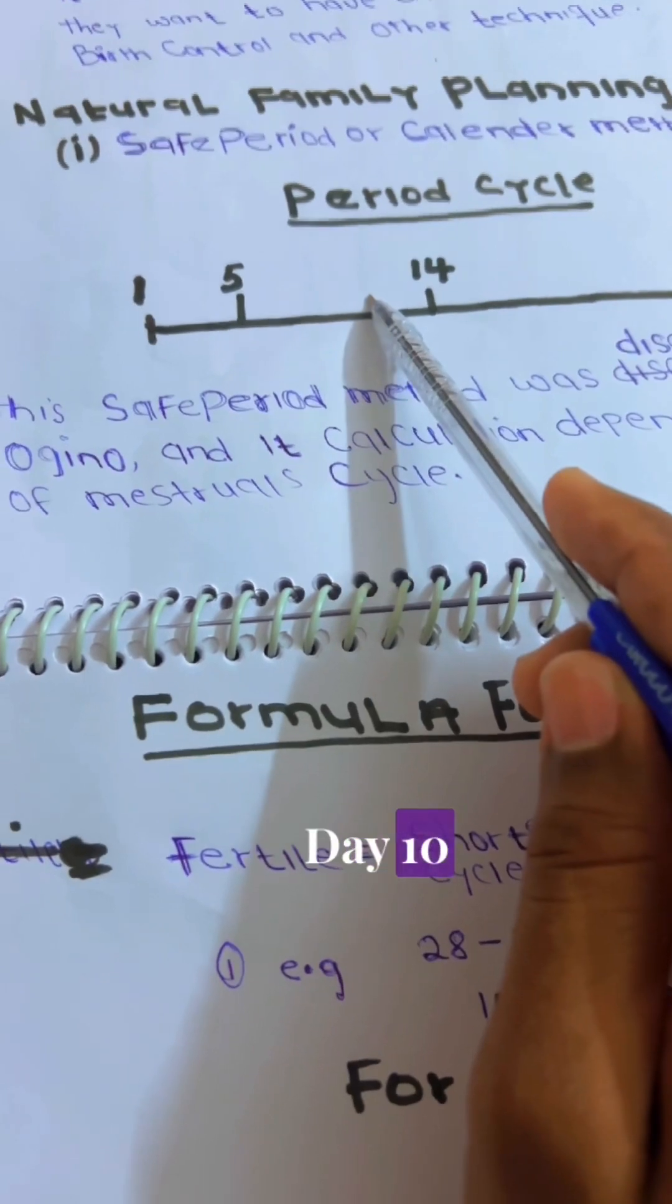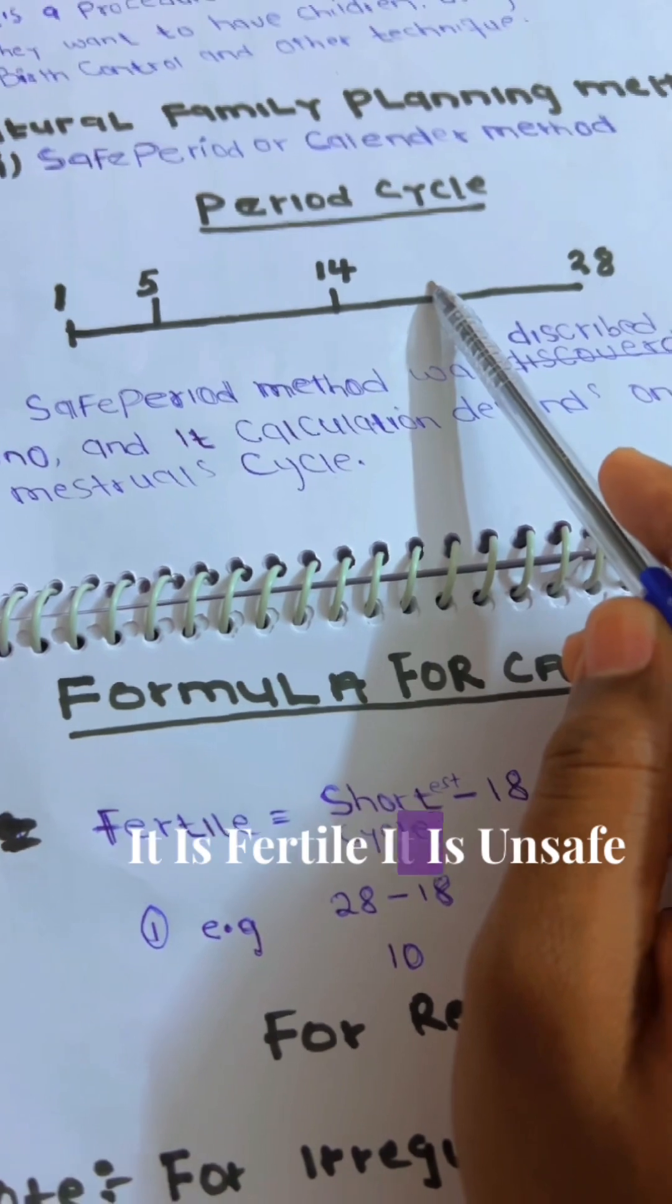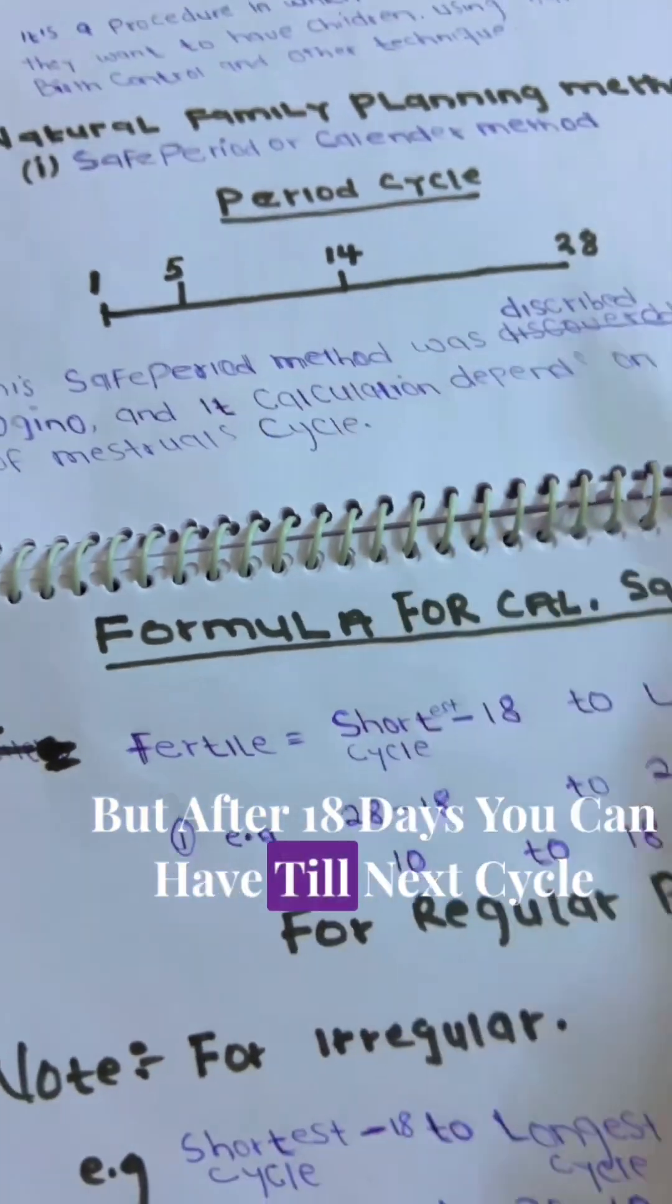After the 10 to the 18, you cannot have, it is fertile, it is unsafe. But after 18 days, you can have till next cycle.